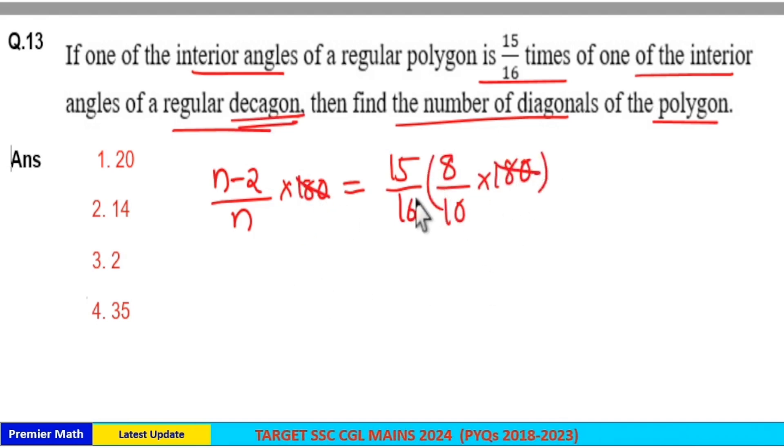Now, 180 and 180 cancel. 5 goes 3 times in 15, 2 times in 10, and 8 goes 2 times in 16. So, 3/4 equals (n-2)/n.